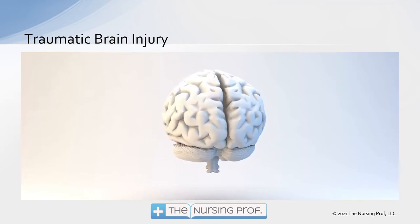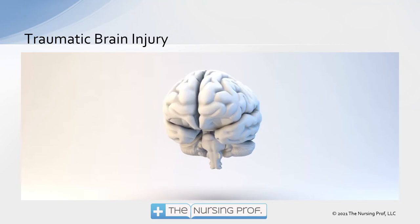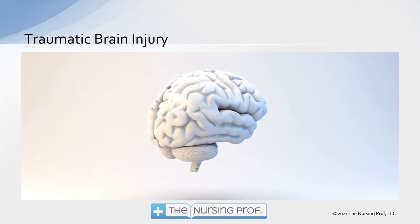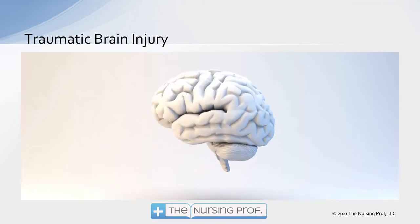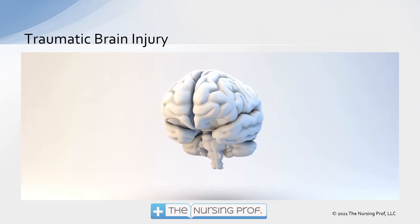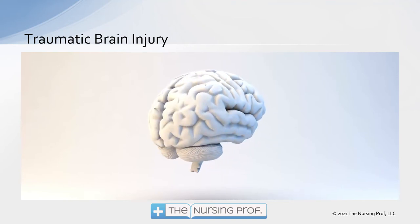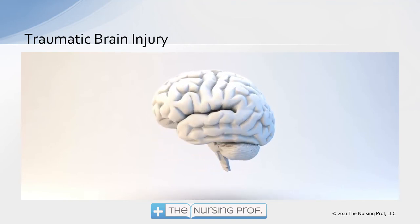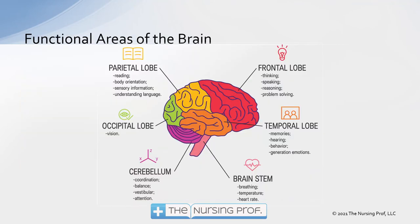It helps to visualize, as you talk about these different injuries, what part of the brain is involved in the process of the traumatic brain injury. So let's take a look at some of those different functional areas to begin with. When we're looking at the brain, one of the big areas there in the front is the frontal lobe. This is responsible for our thinking, speaking, reasoning, and problem solving.